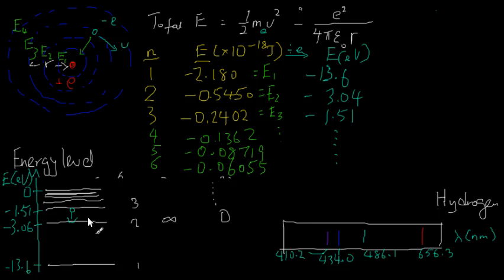So this energy change, this decrease in energy, might be converted into a photon energy, which is equal to HF, according to Einstein's relation from the photoelectric effect. So if we know these two energies, we can find the difference and solve for the frequency and wavelength. And then we would be able to calculate this wavelength and check if it agrees with these measured values. So these values that are written here are the measured values.